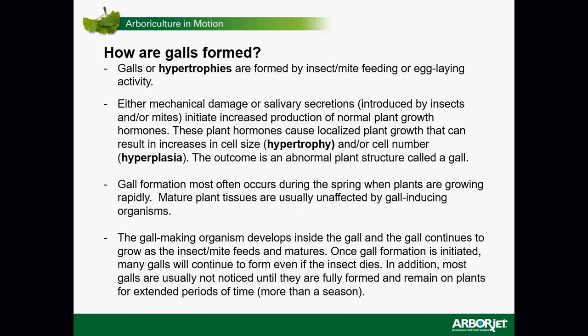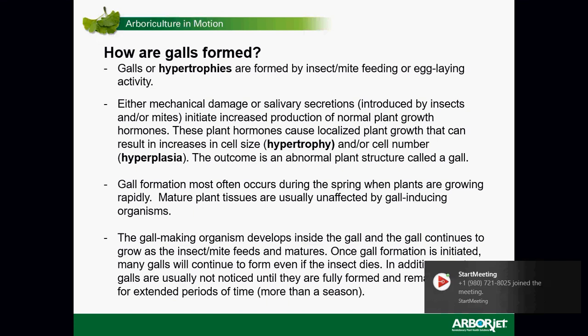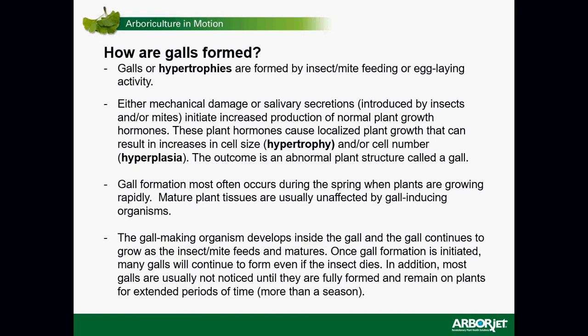How are galls formed? Galls, or what they are sometimes called hypertrophies, are formed by insect and mite feeding and/or egg-laying activity. It's caused by mechanical damage, but more often by salivary excretions that these insects or mites inject into the plant, which causes increased production of plant growth hormones such as auxins and cytokinins.